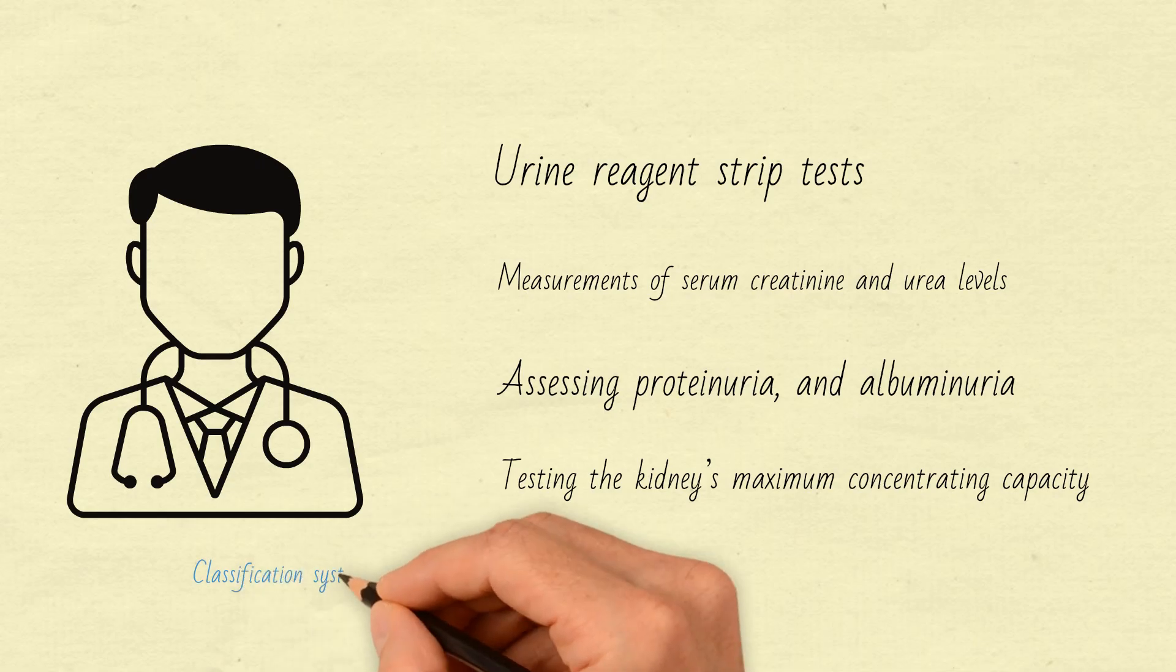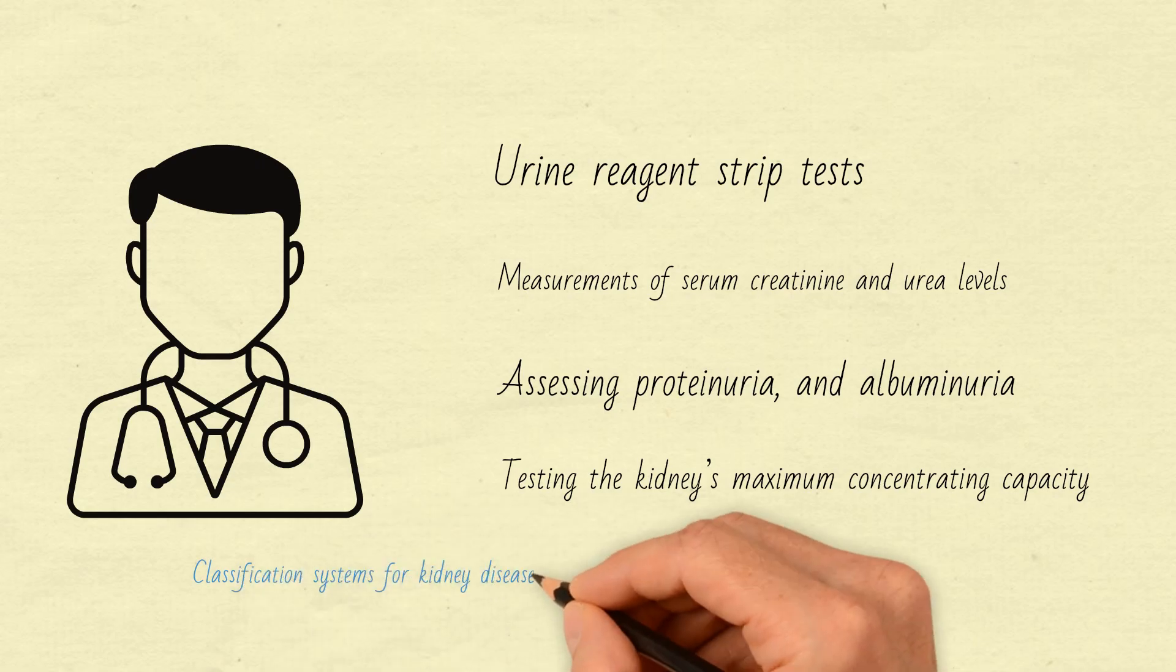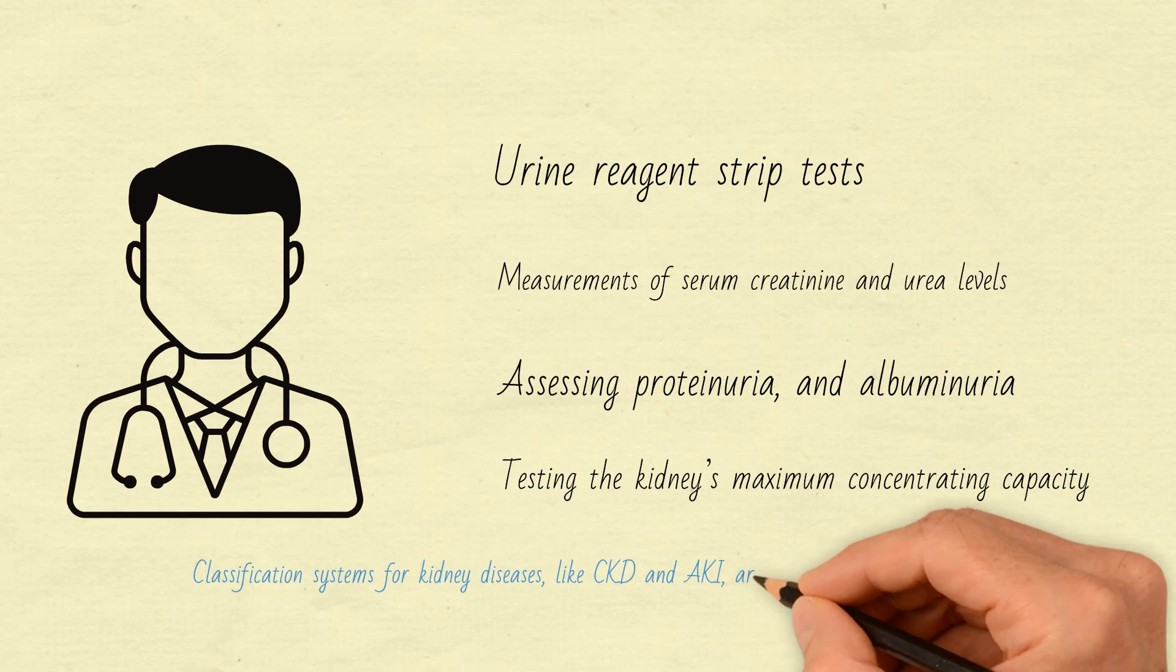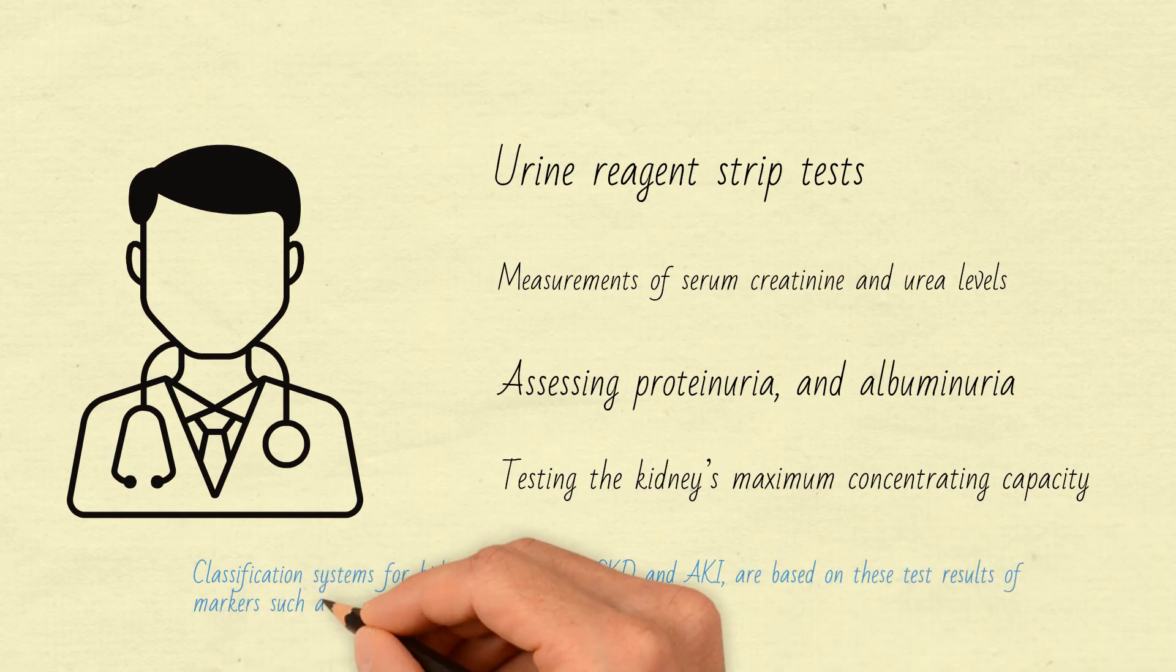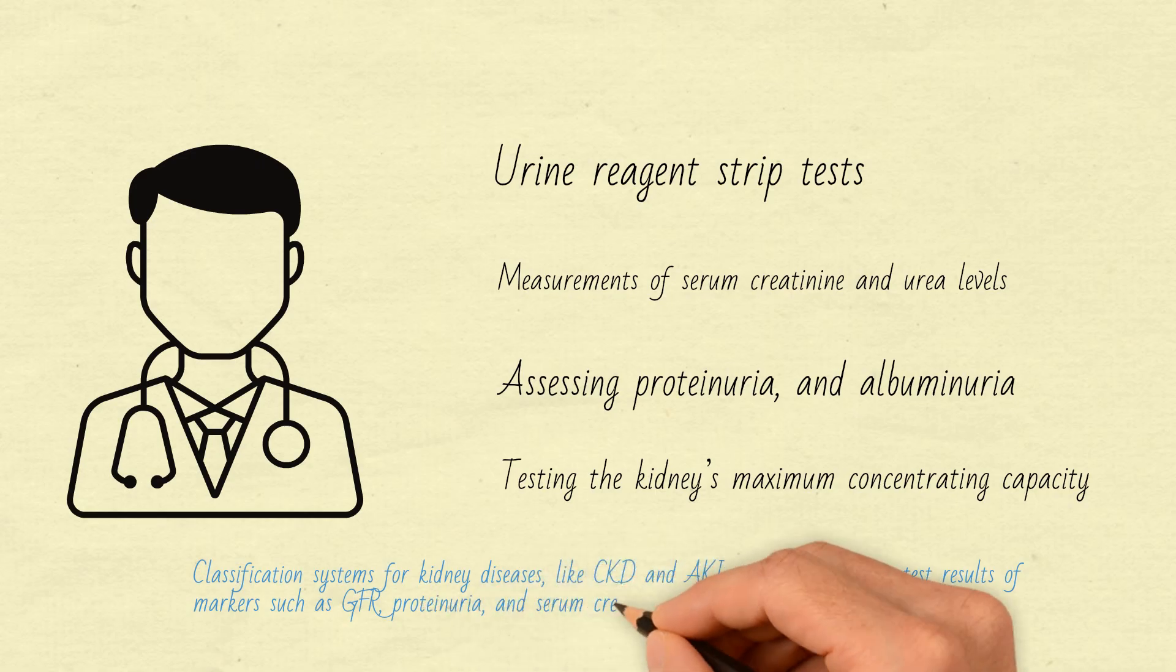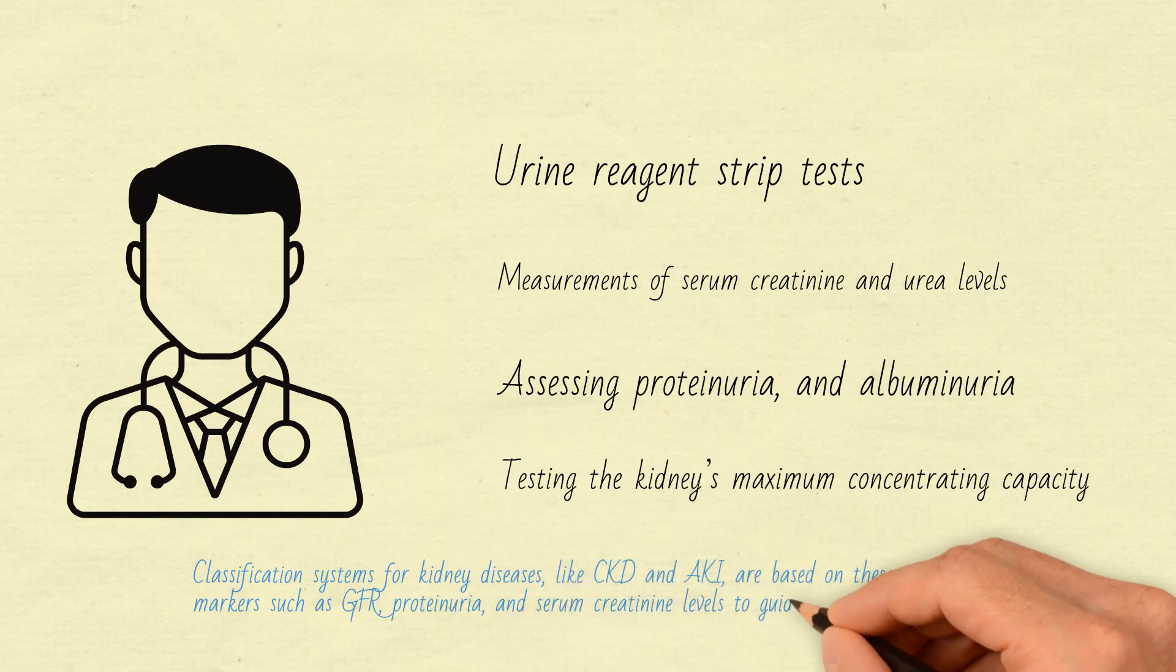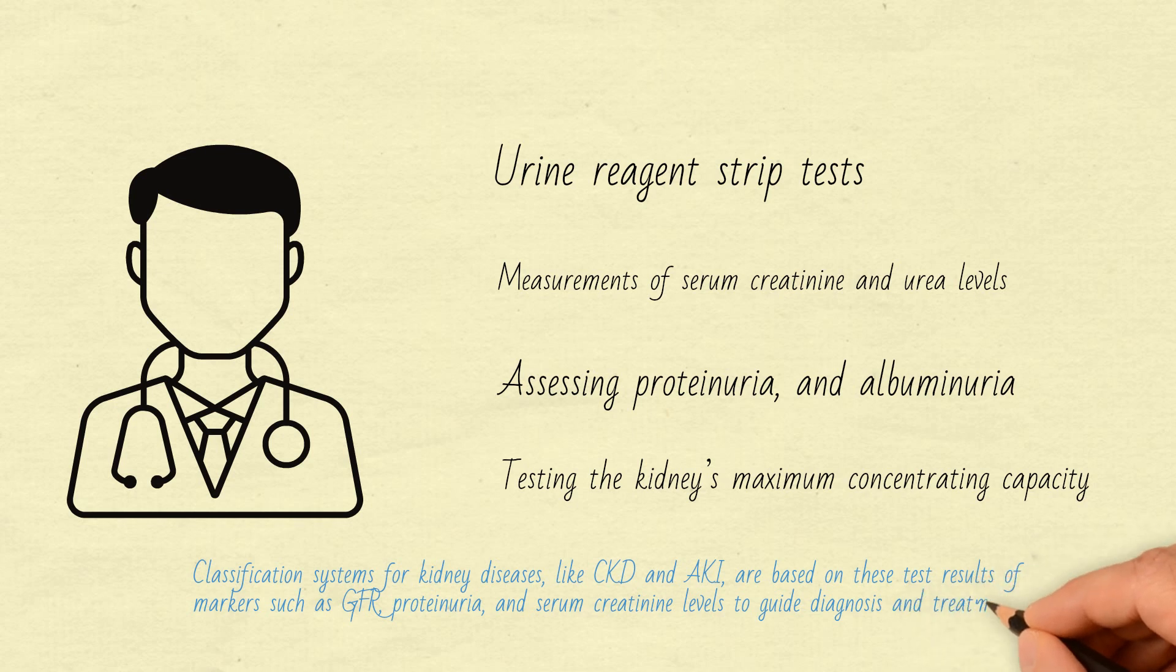Classification systems for kidney diseases, like chronic kidney disease (CKD) and acute kidney injury (AKI), are based on these test results. They use markers such as GFR, proteinuria, and serum creatinine levels to guide diagnosis and treatment.